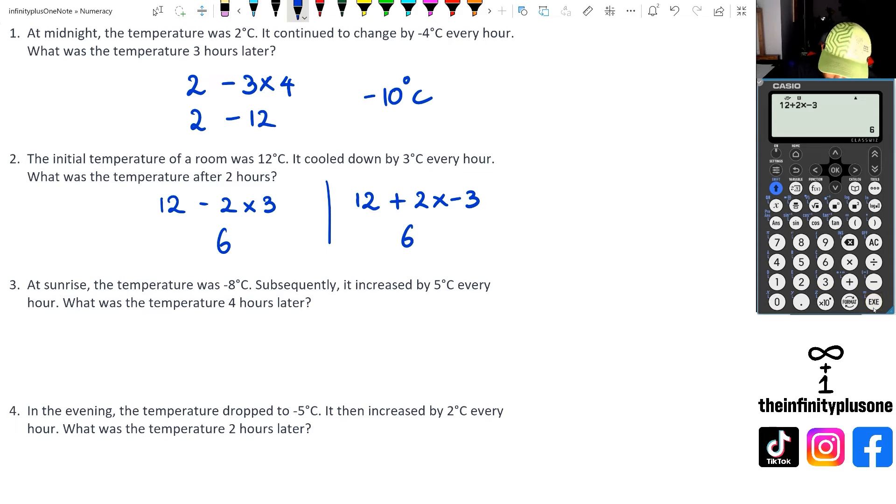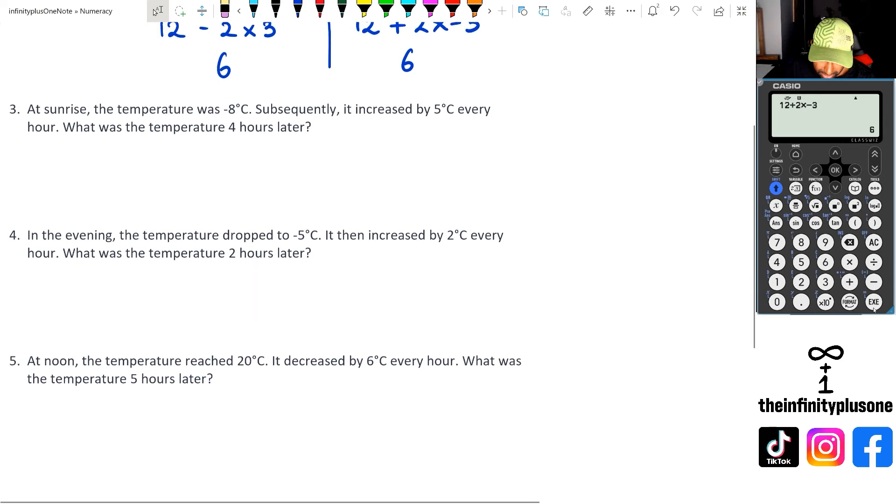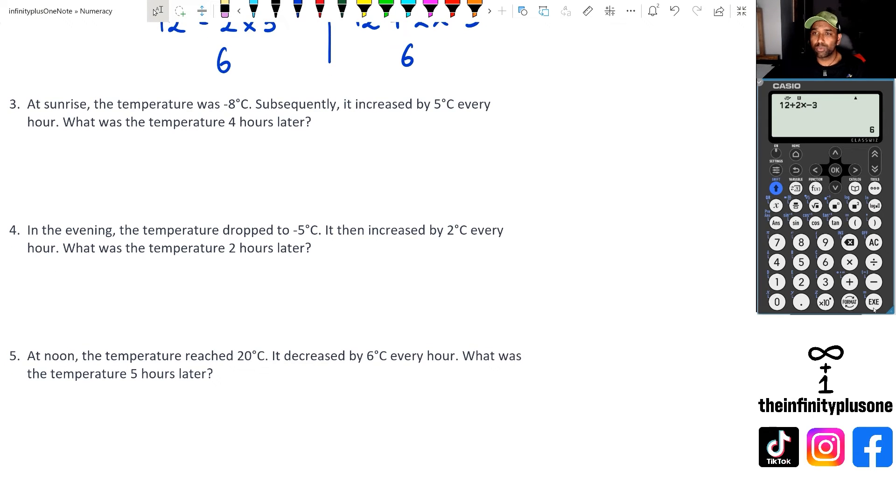And if we were to do 12 plus 2 times negative 3, again we're getting the same answer, which is 6 degrees. Let's look at question three. Actually, what I might do is I might just pause for a second here while you folks try these three questions out, and then I'll go through the answer.